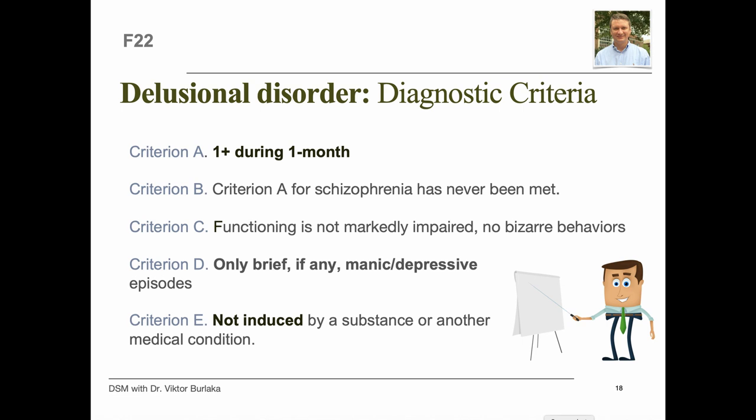For the diagnostic criteria for delusional disorder, Criterion A requires the presence of one or more delusions with a duration of one month or longer. Criterion B states that Criterion A for schizophrenia has never been met — if there are hallucinations, they are not prominent and are related to the delusional theme. For example, the sensation of being infested with insects is associated with delusions of infestation.